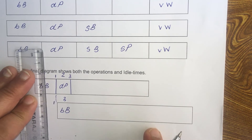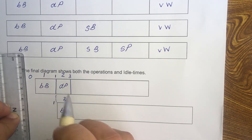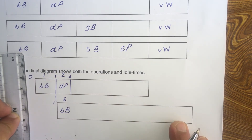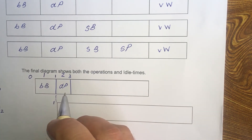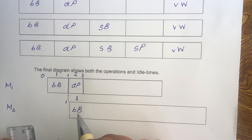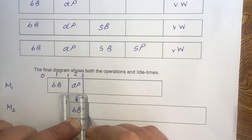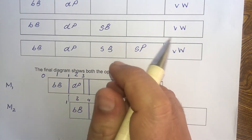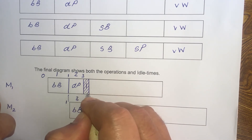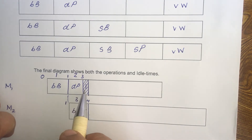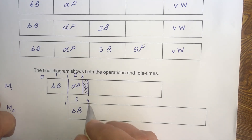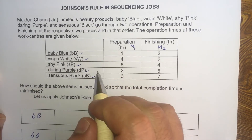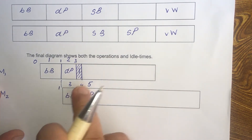Daring Purple finishes M1 by hour 3 and should come down to M2, but Baby Blue is still being processed in M2 and won't finish until hour 4. So there is a waiting time of 1 hour in M1. Daring Purple comes down to M2 after hour 4 and takes 5 hours there, completing by hour 9.